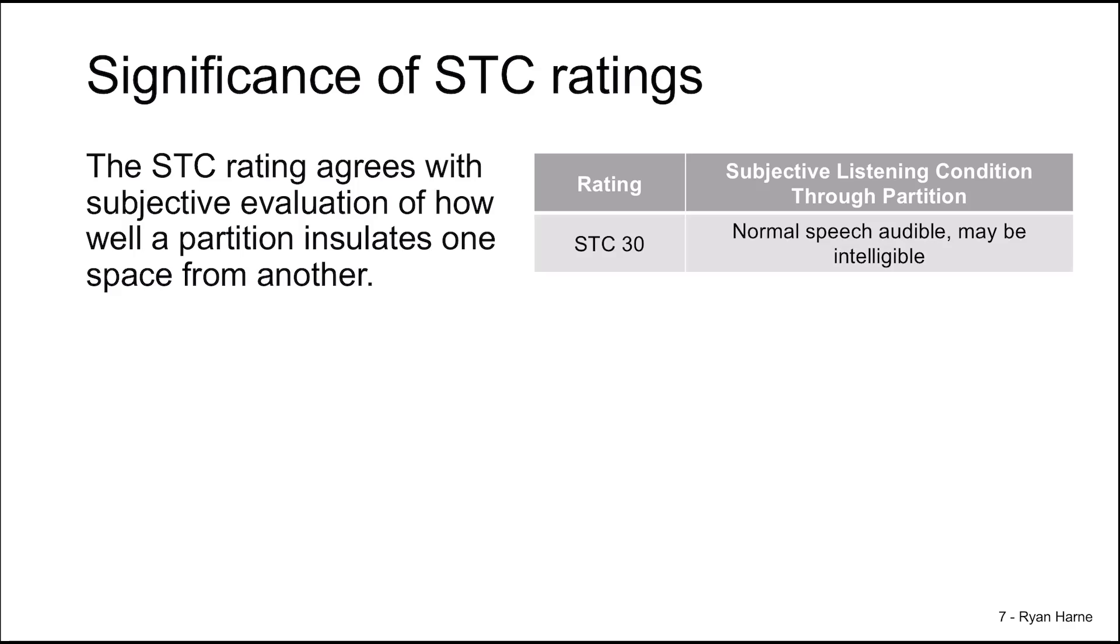STC 30 means that between one and another room we can actually hear speech fairly intelligibly, quite audibly. STC 40 steps this up so that we can hear loud speech but it's not quite intelligible. STC 45 makes it barely audible for us to hear even the loudest of speech.